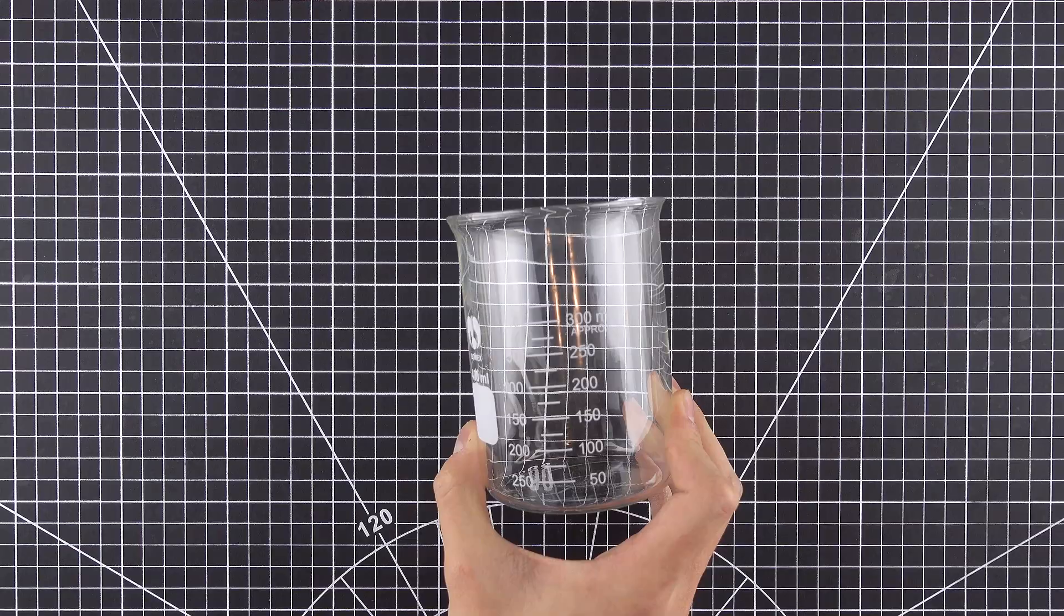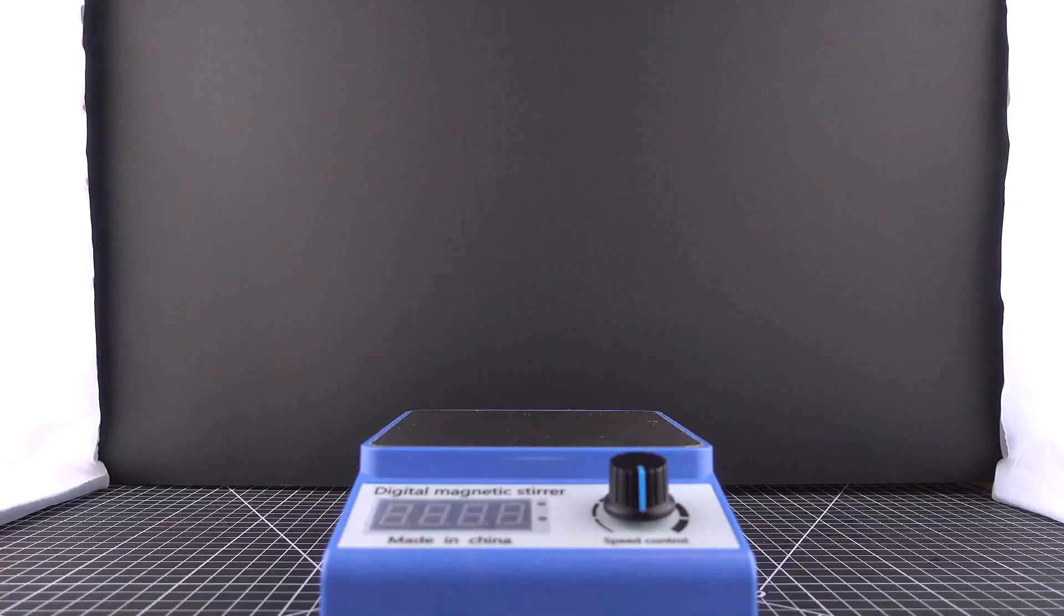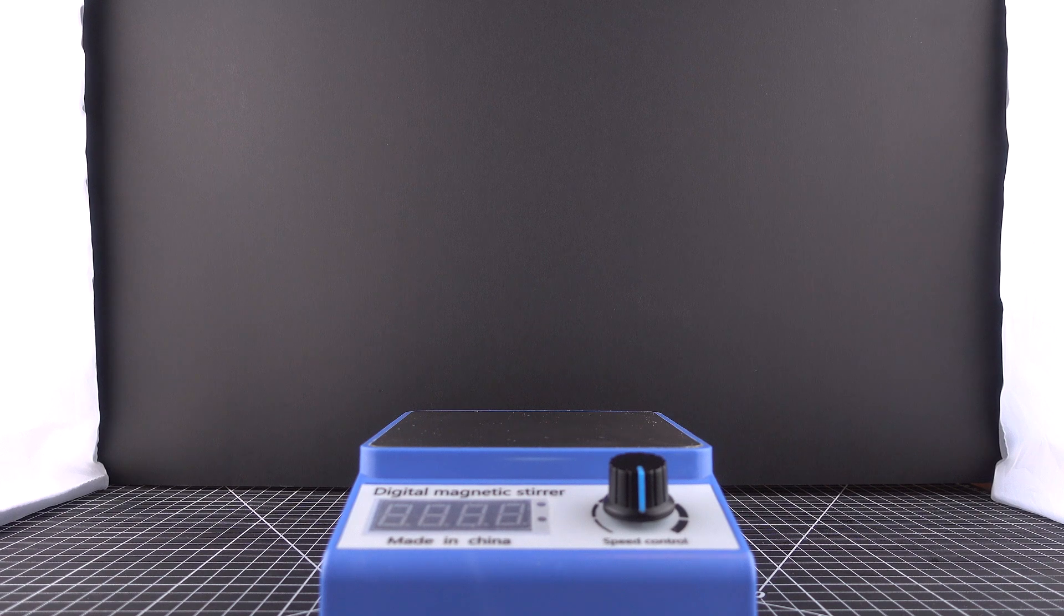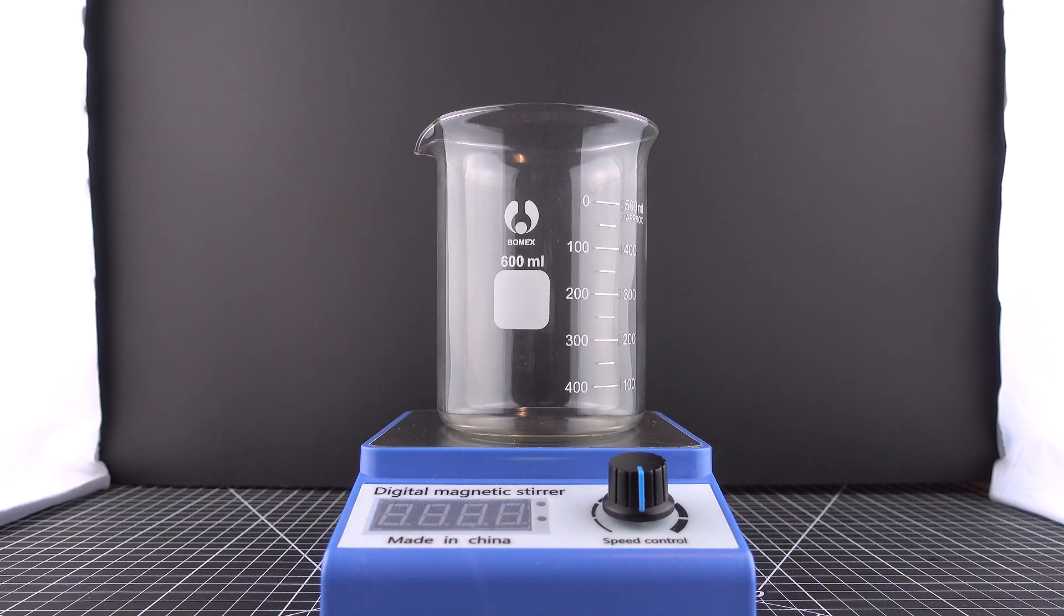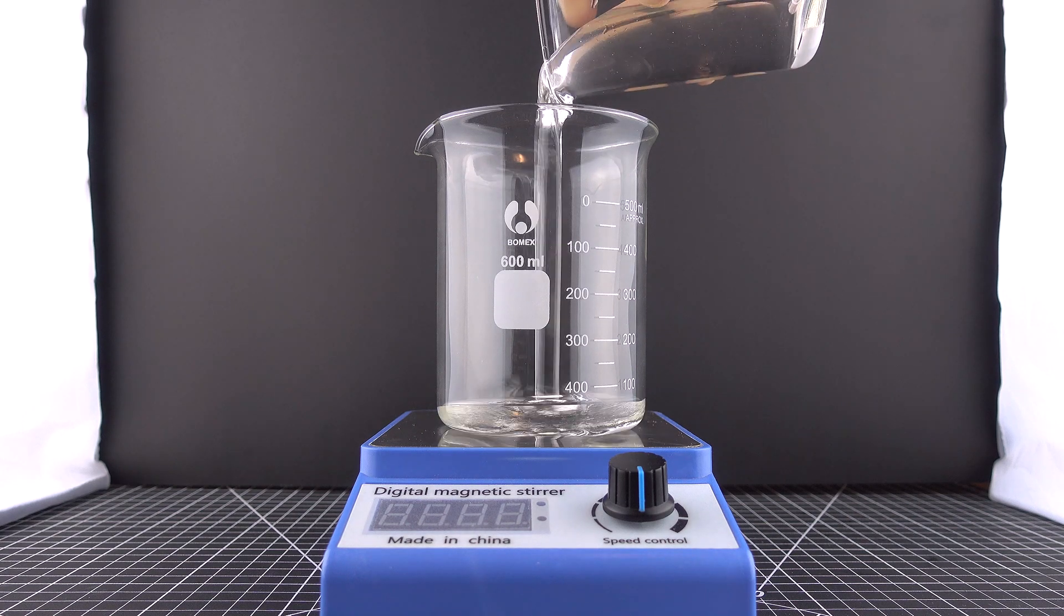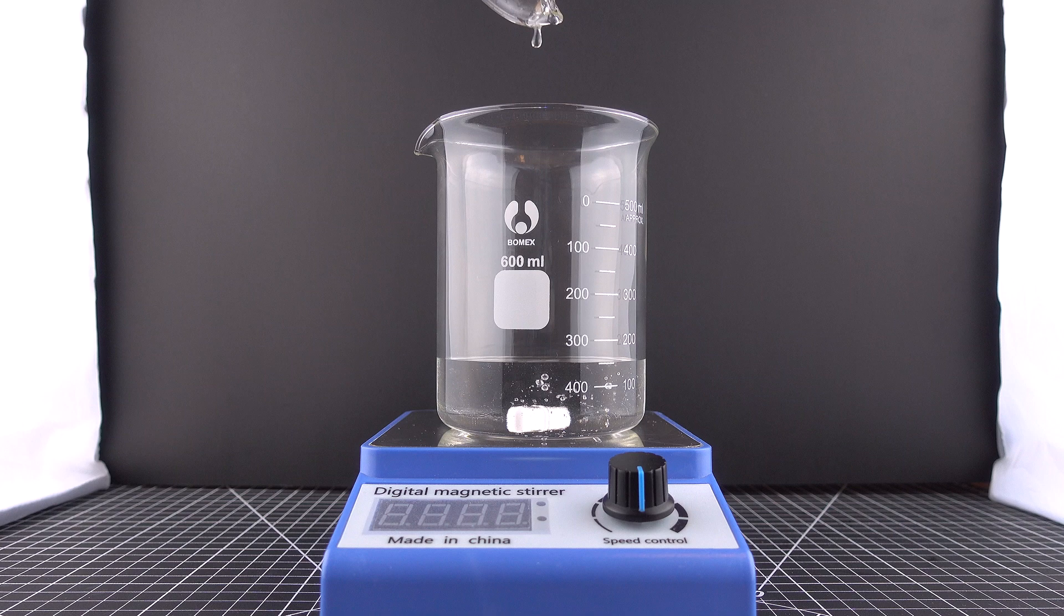For the viscous fluid, I bought several bottles of glycerol. The preparation is also quite simple. I just pour the glycerol into the beaker, drop in the stir bar, and turn up the stirring speed. If all goes well, the stir bar should begin to levitate.